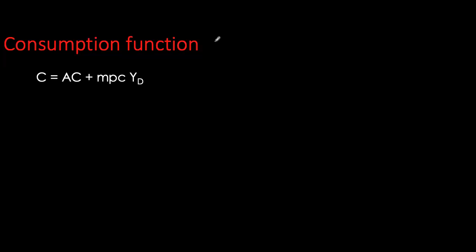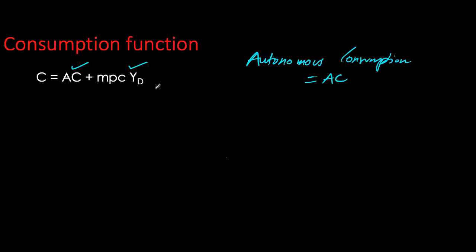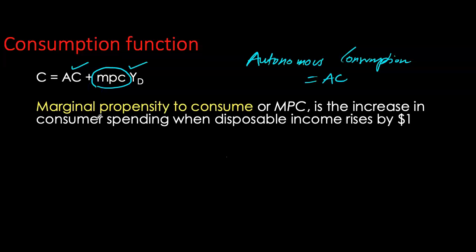The aggregate consumption function for all households in the economy can be split into two parts. We have autonomous consumption (AC), which is exogenous to the model and does not depend on income — even if income is zero, you consume some basic goods and services. The second component depends positively on disposable income: higher disposable income means higher consumption, and lower disposable income means lower consumption. How much consumption changes with income is given by the coefficient MPC — the marginal propensity to consume — which tells us how much consumers increase spending for every one dollar increase in income.